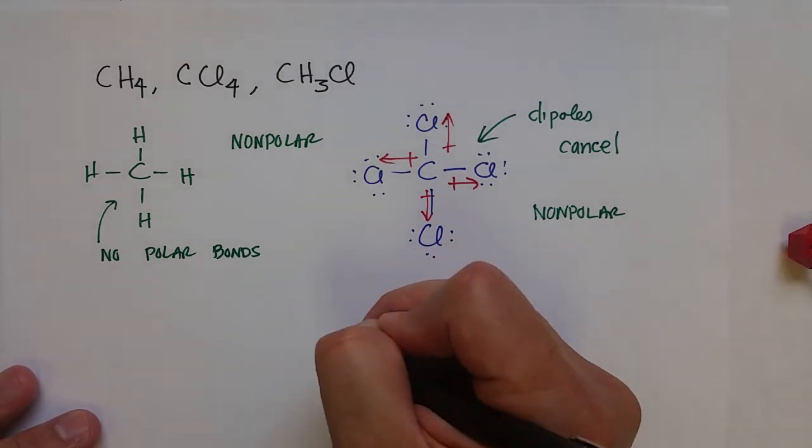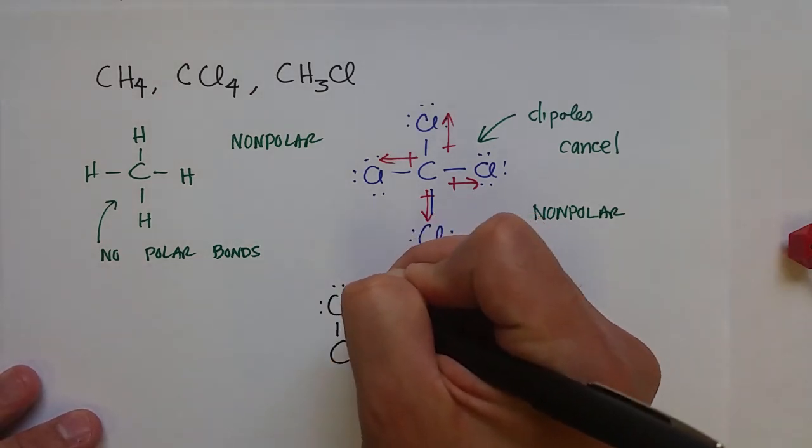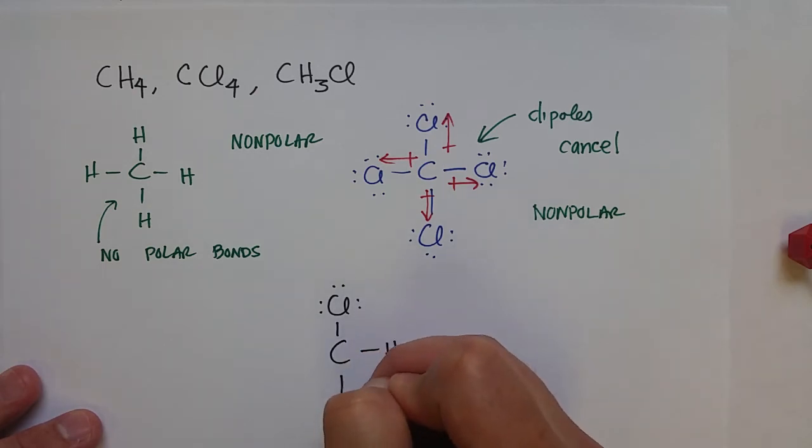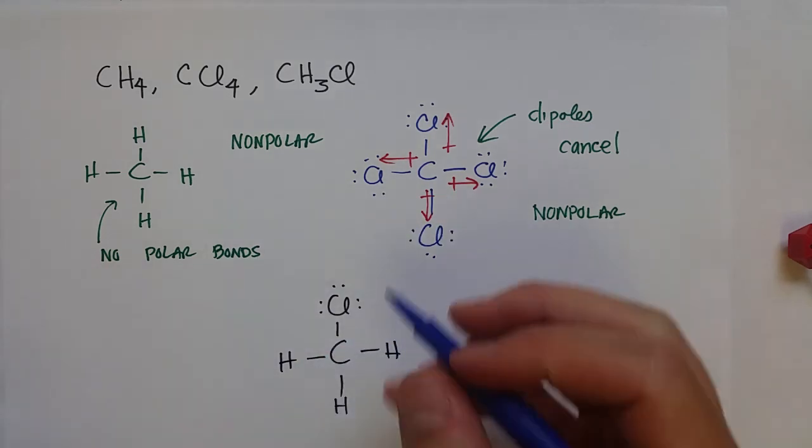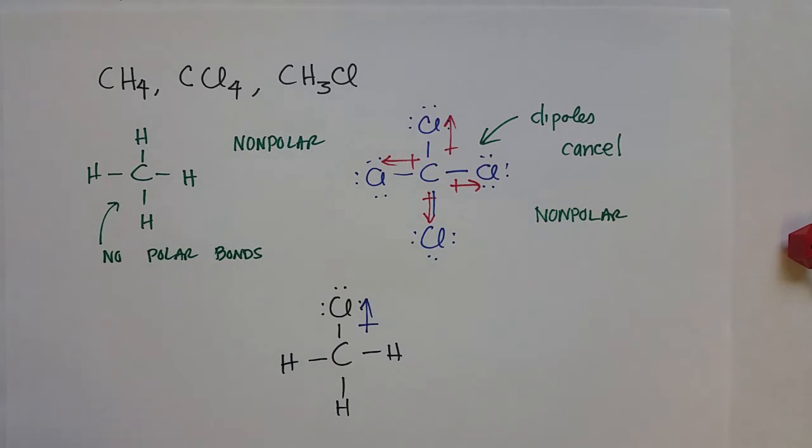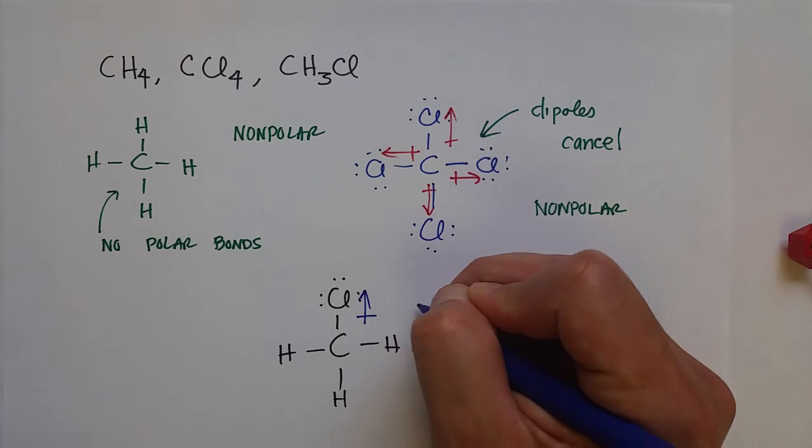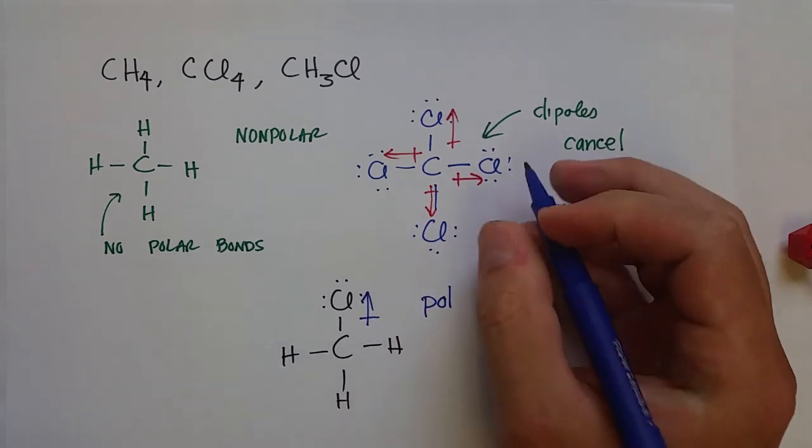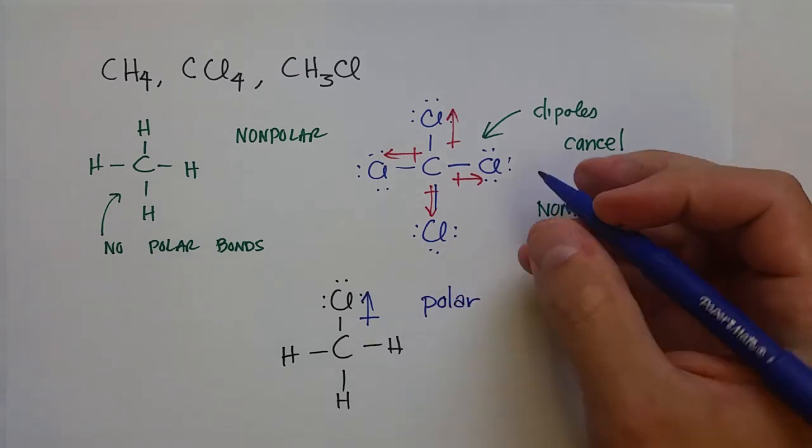Finally, we've got CH3Cl. We've got one chlorine and three hydrogens. And carbon-chlorine bond is polar. So there is a dipole moment towards chlorine. And since there's nothing else, no other dipole moments, carbon-hydrogen bond is nonpolar, there's no other dipole moments to cancel this out. And so there is a net dipole moment. So CH3Cl, methyl chloride, is polar.